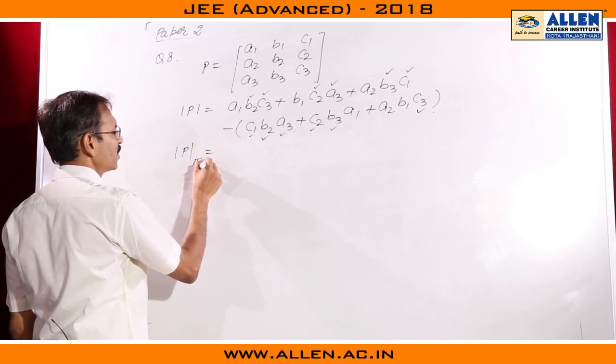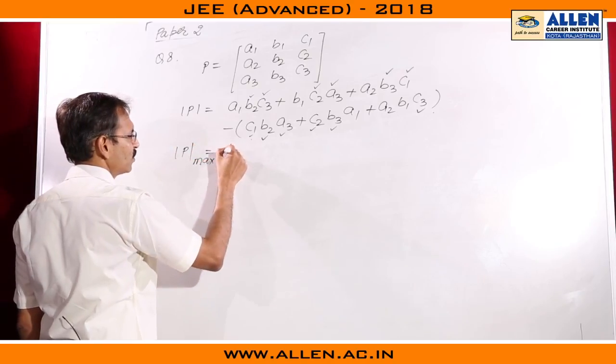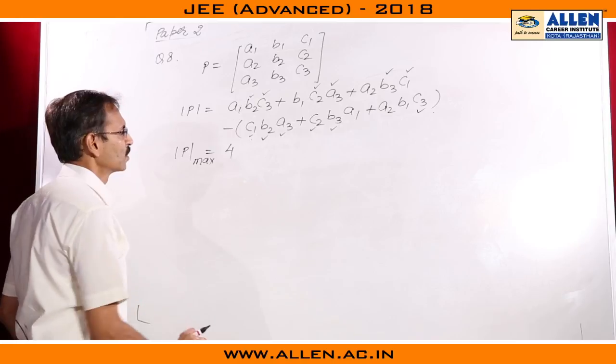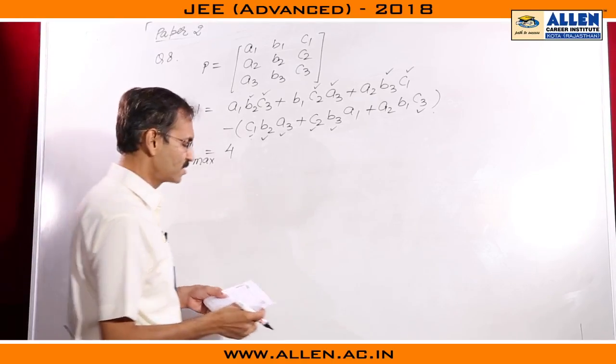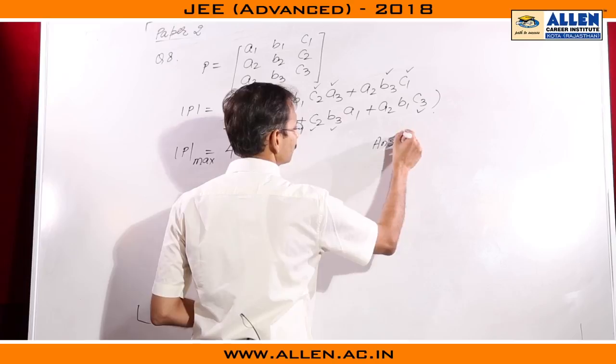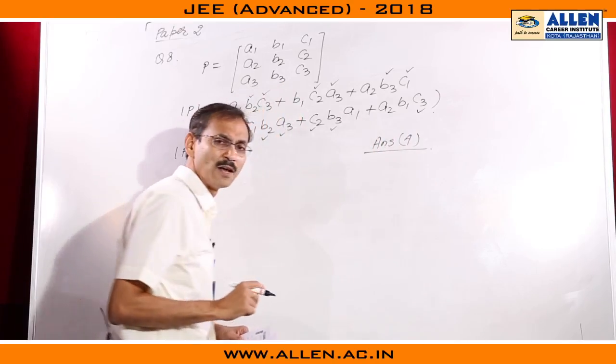So the maximum value which anyone can get is 4. So I will write determinant of P, maximum value is 4. So the answer is 4. This is a numerical value problem.